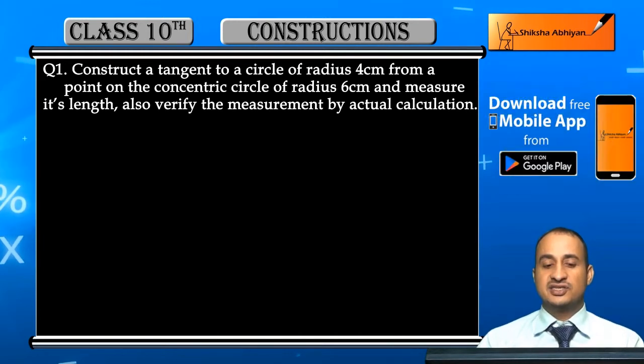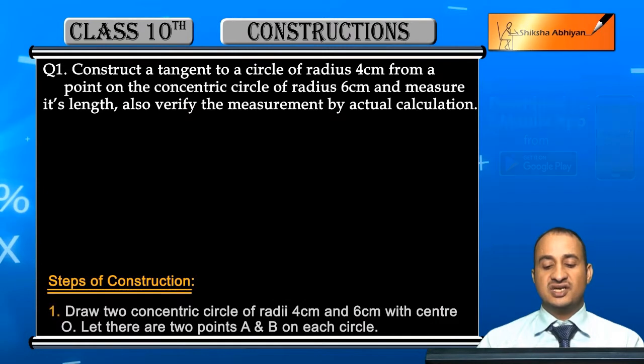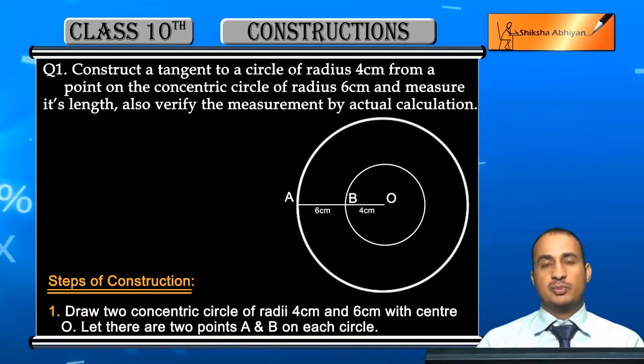First of all, draw two concentric circles of radius 4 cm and 6 cm. Aap ne banayi with center O, O center se 4 cm aur 6 cm ke dono circles.